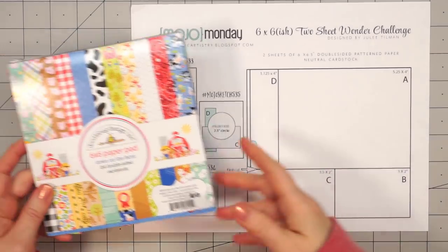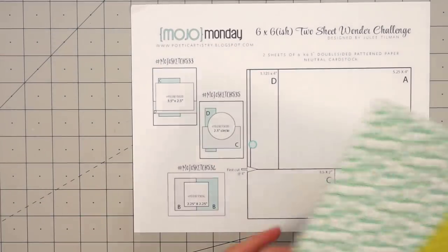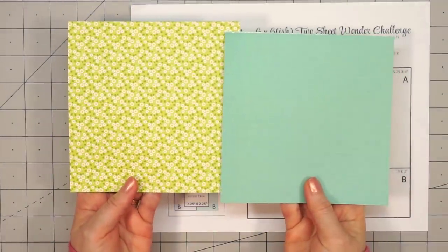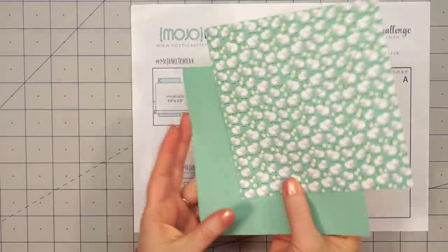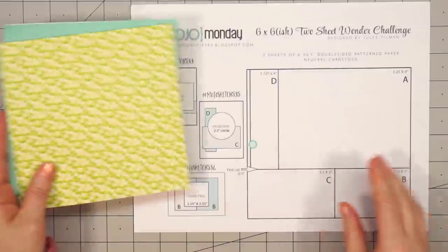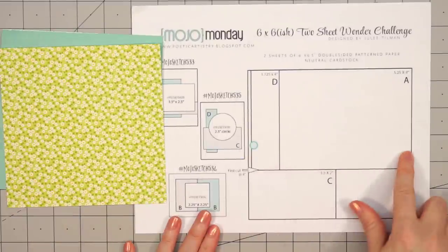So I'm pulling out an older Doodlebug paper pad called Down on the Farm, and I selected two papers. I'm showing you both sides - three of them are pretty neutral with flowers on one side, but there is one side that has sheep.